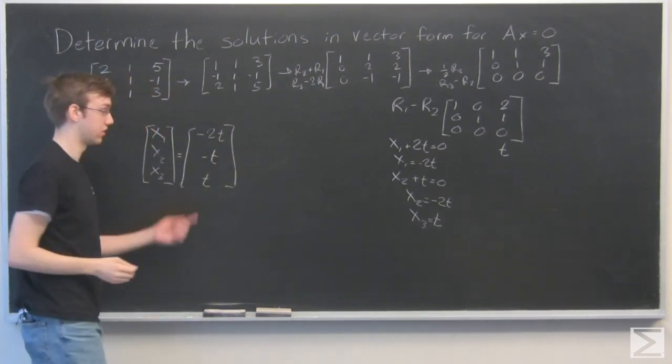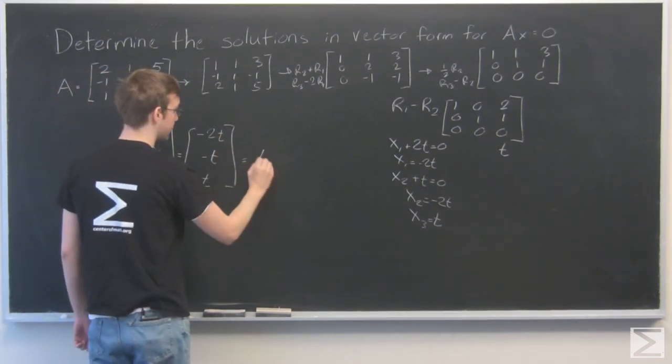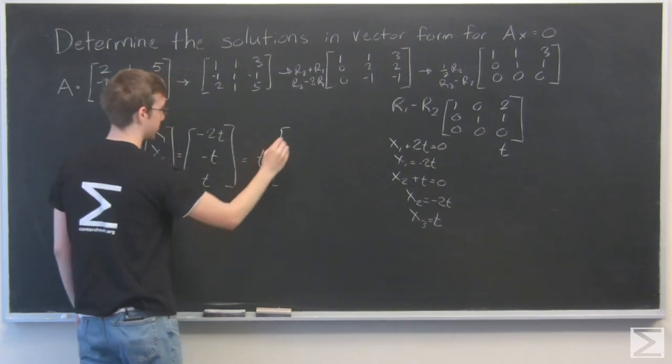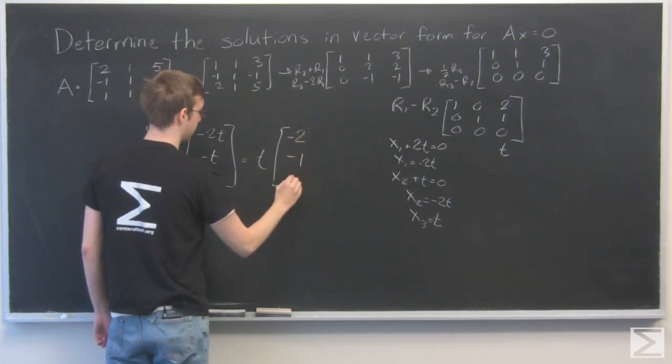And we can factor out a t just to get it looking nice. We get t times the vector minus 2, minus 1, 1. So there you have it.